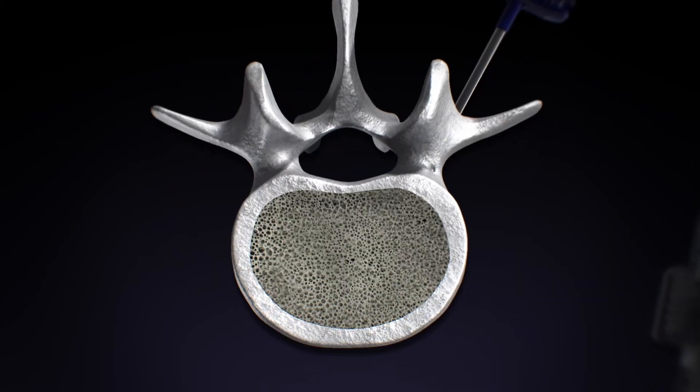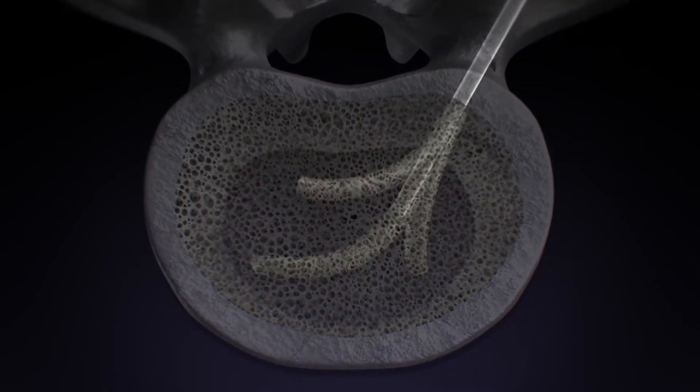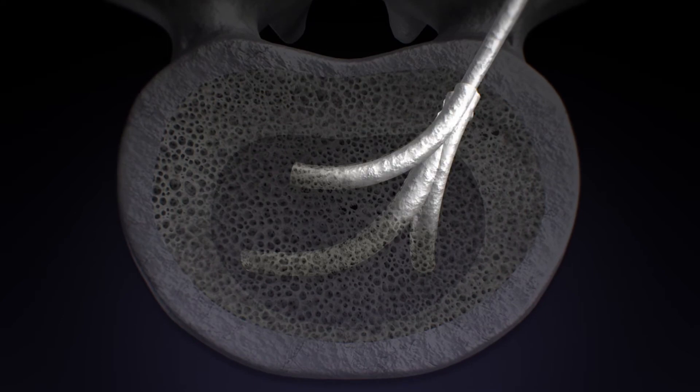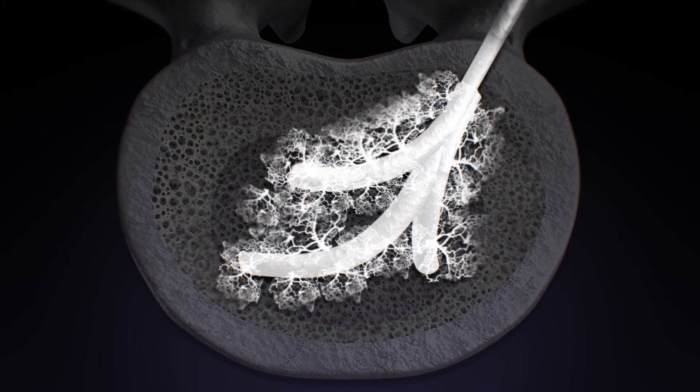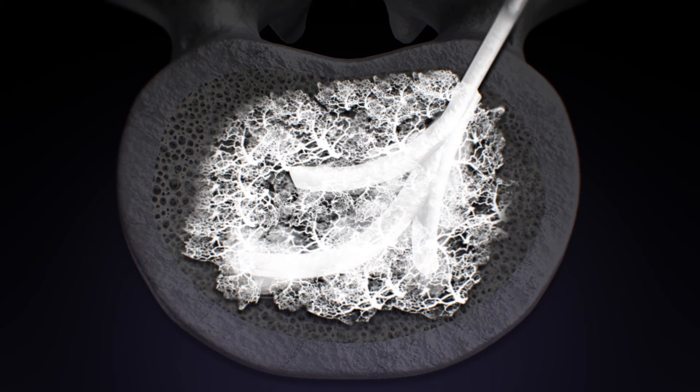High viscosity cement preferentially fills the pathways created by the power curve, then interdigitates into the adjacent intact cancellous bone. This targeted cement delivery helps provide fracture stability.